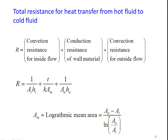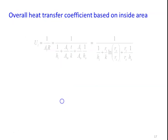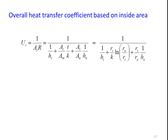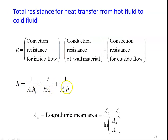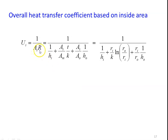The total resistance for heat transfer between hot and cold fluid is R = 1/(Ai·Hi) + t/(K·Am) + 1/(Ao·Ho), where Am is the logarithmic mean area: Am = (Ao − Ai) / ln(Ao/Ai). Based on these resistances, the overall heat transfer coefficient based on inside area is Ui = 1/(Ai·R), which simplifies to: 1/Ui = 1/Hi + (Ri/K)·ln(Ro/Ri) + Ri/(Ro·Ho). Similarly, the overall heat transfer coefficient based on outside area is Uo = 1/(Ao·R), giving: 1/Uo = Ro/(Ri·Hi) + (Ro/K)·ln(Ro/Ri) + 1/Ho.